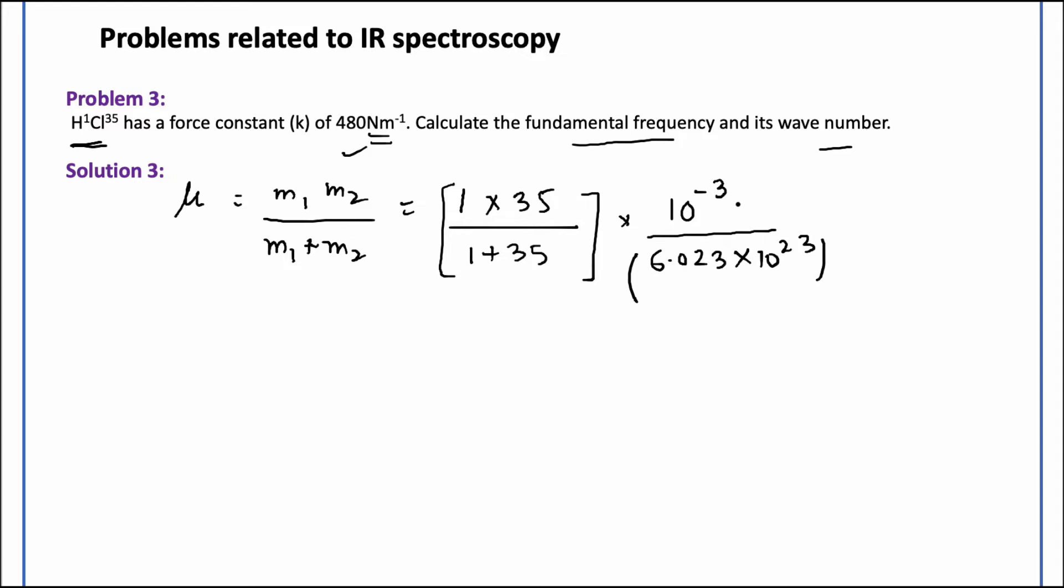I have divided it by the Avogadro number. The answer which was coming, it was in grams, I want to get it in kilograms so I multiply it by 10 to the minus 3. So I get 1.615 times 10 raised to the power minus 27 kilograms.